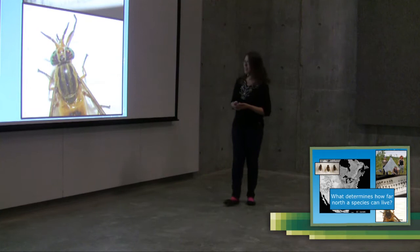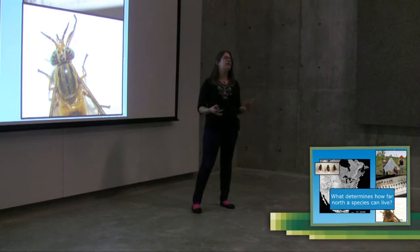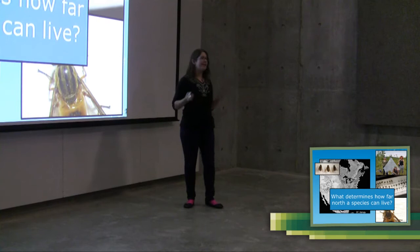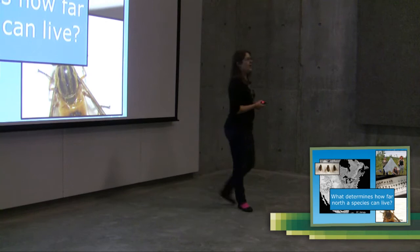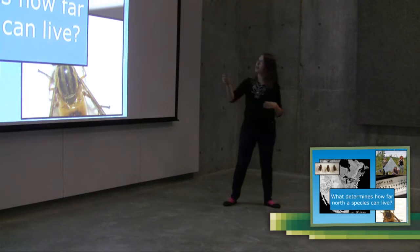And really, that's an ongoing question in biology. What determines where an animal can live and where it can't live? And so what really fascinated me about this fly in the end was how far north could this species live? What determines that? And really, one of the best answers we have is the cold tolerance of that animal.